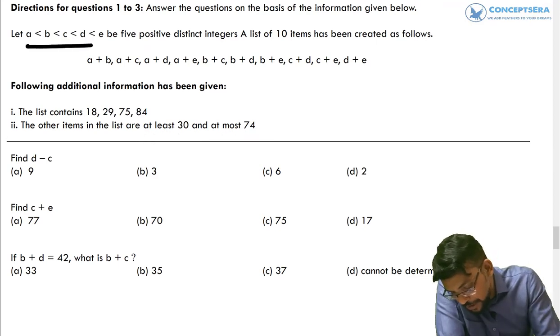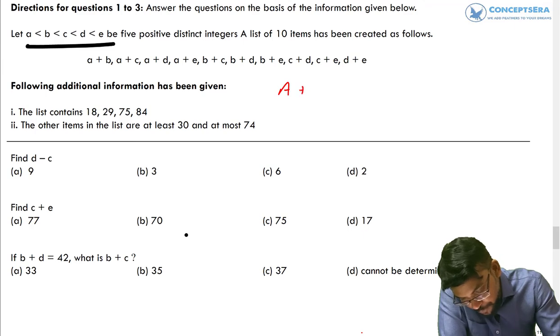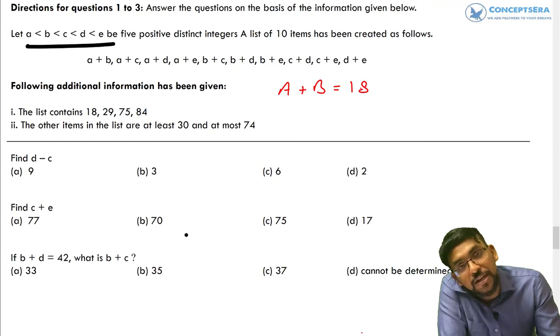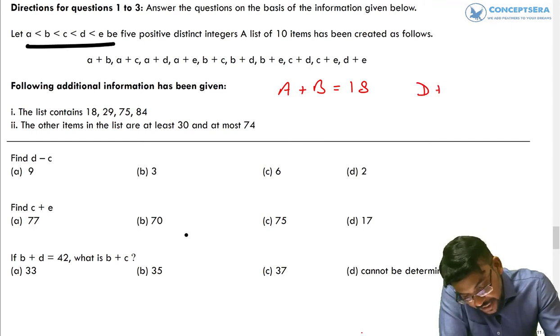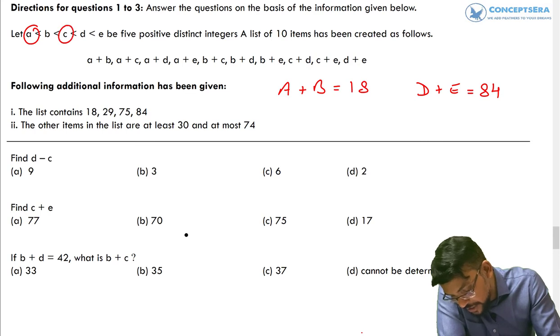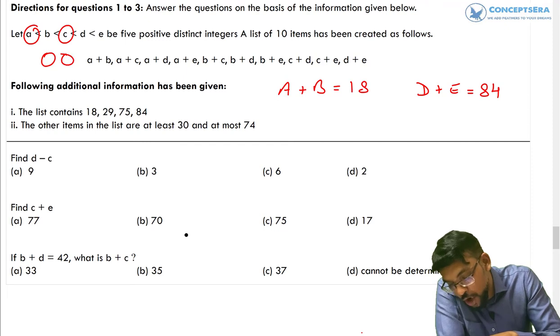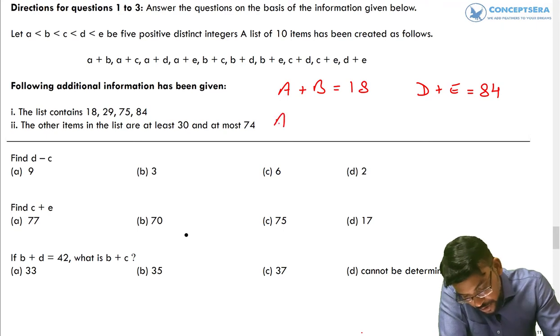Now, if we know this particular relation, we can definitely decode which summation will be the minimum possible number. So we can say from here A plus B will be minimum possible summation, which is given to us 18. And D plus E will be maximum possible summation, which is given to us 84. Now we look for the second minimum A plus C or B plus C. What has to be second minimum? Definitely C is common and we know A is less than B. So second minimum has to be A plus C. So A plus C has to be 29.